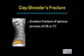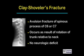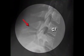Clay shoveler's fractures are avulsion fractures of the spinous process of either C6 or usually C7. They occur as a result of a rotational injury of the trunk relative to the neck. They are named for the original cause — individuals shoveling clay in which the clay did not release from the shovel. There is usually no neurologic deficit and they do not involve the spinal canal. This is an example with a horizontal fracture through the spinous process of C7, as indicated by the red arrow.